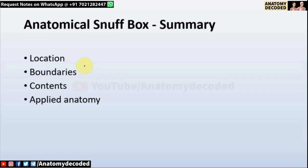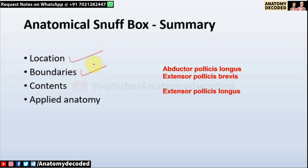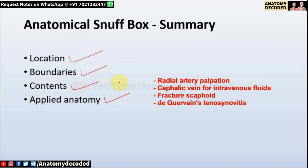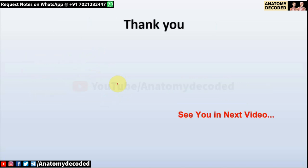To summarize: we covered the location of the anatomical snuff box; the boundaries formed by three muscles — abductor pollicis longus, extensor pollicis brevis, and extensor pollicis longus; the chief content, which is the radial artery; and in applied anatomy — palpation of the radial artery, cephalic vein for intravenous access, fracture of the scaphoid, and de Quervain's tenosynovitis. Thank you.